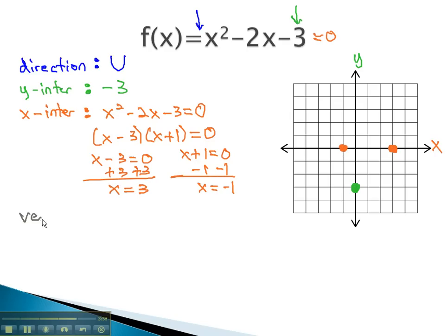The only thing left to find is the vertex, which we do by using the formula the opposite of b over 2a. Remember, from the quadratic formula, we get a, b, and c from our coefficients, so the opposite of b will be positive 2 over 2a, or 1. This reduces to 1, so 1 must be the x-value of the vertex.